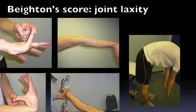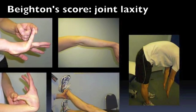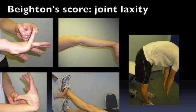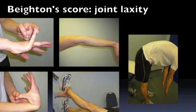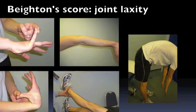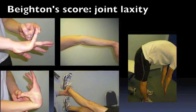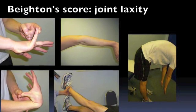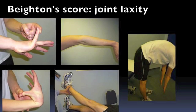During our instability examination we would always consider joint laxity. This can be done by using the Beighton score, which has five components as shown here. For more details on this you can view our website.